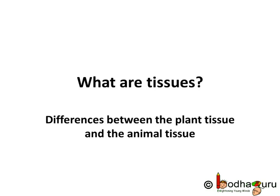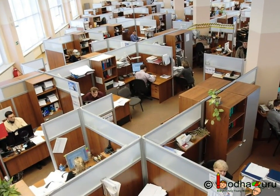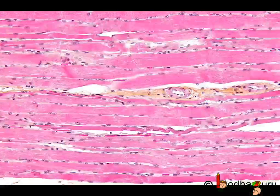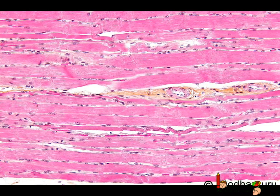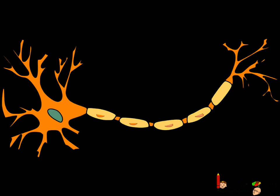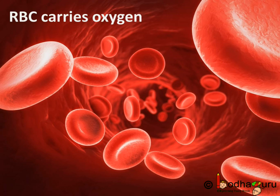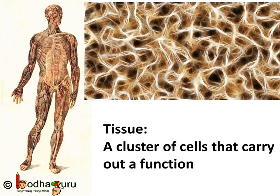Hello everyone! Not everyone in a company or office does the same work, right? Same way, not every cell inside our body does the same work. For example, the muscle cells create movement, the nerve cells carry signals, and the blood cells carry oxygen or may kill bacteria. So, cells specializing in one function are grouped together in a body. This means that a particular function is carried by a cluster of cells at a part of the body. This cluster is called tissue.